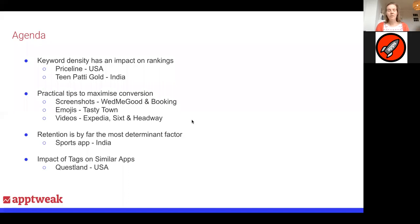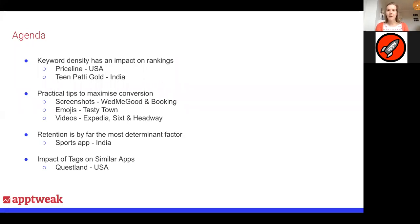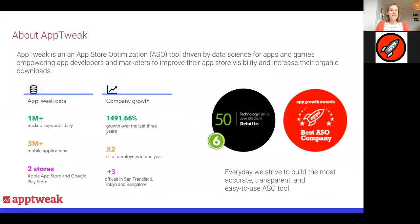Different topics that I'll be covering today. First, I'll talk about keyword density and how that can impact your rankings as an app. I'll mention a few practical tips that might help you optimize your conversion. I'll talk about retention — I have a really nice story of how retention can impact your rankings in Google. And then I'll end on a short talk about the impact of tags on similar apps.